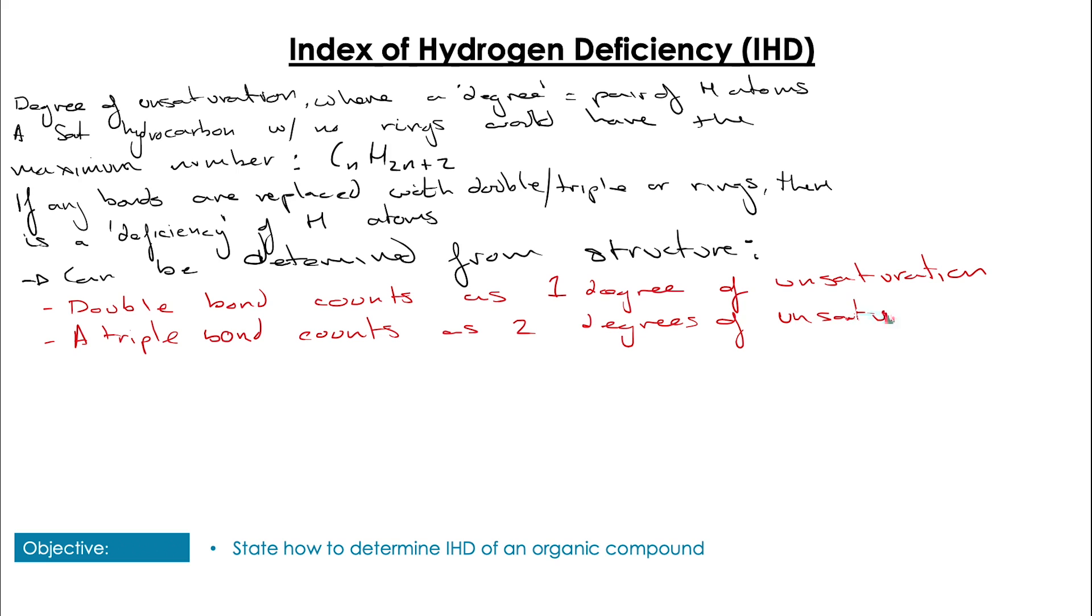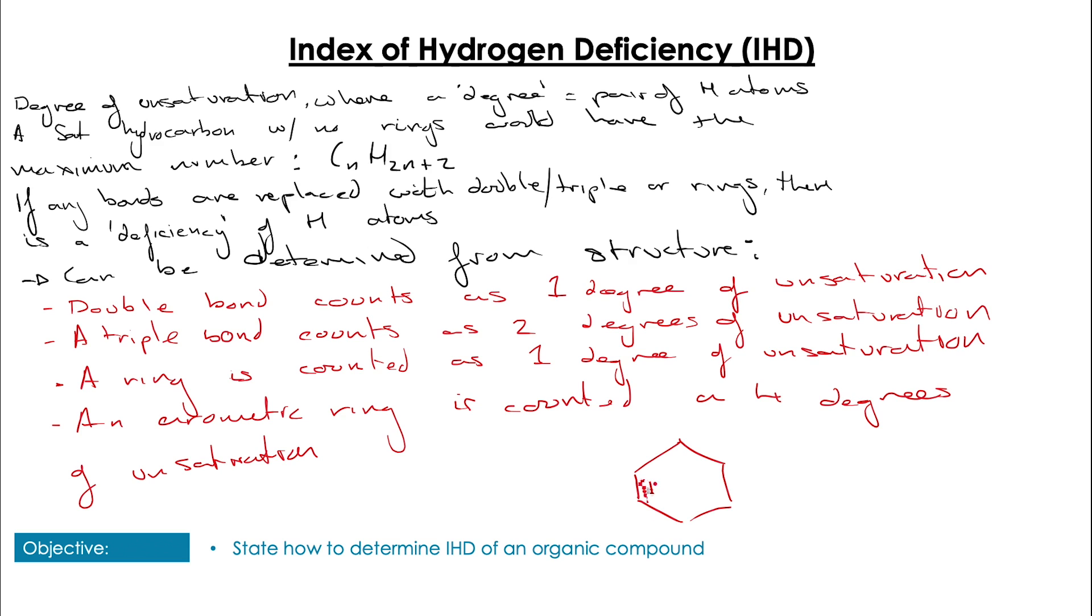But it's not just double or triple bonds. Also a ring, where the carbon chain joins back with itself, will also count as one degree of unsaturation. Indeed, an aromatic benzene ring is going to have a degree of unsaturation of four.